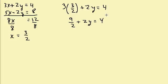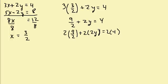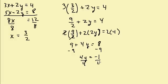Now I need to solve this. I'll get rid of the fraction by multiplying by the common denominator, which is 2. So I get 2 times 9 halves plus 2 times 2y equals 2 times 4, which gives 9 plus 4y equals 8. Subtracting 9, I get 4y equals negative 1. Dividing both sides by 4, y equals negative one-fourth.